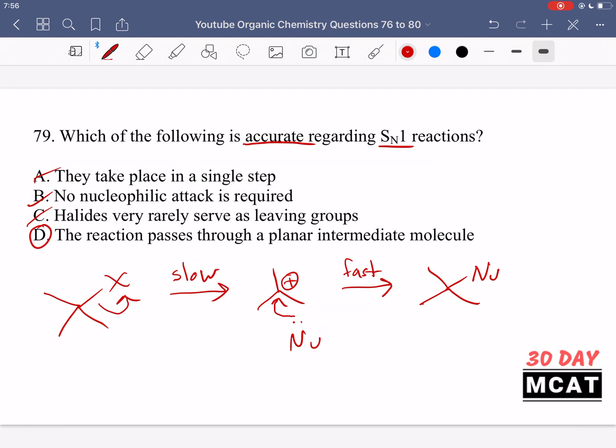It's saying the reaction passes through a planar intermediate molecule, which would be this right here, the carbocation, which is positively charged and it's a planar molecule. Therefore, when you get attacked by the nucleophile, if you have stereochemistry, it could be both. Both enantiomers are going to be formed because we can get attacked from either face. So D is correct regarding SN1 reactions.